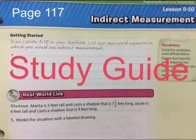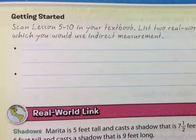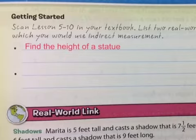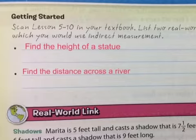Hello everyone, welcome to your study guide lesson 5-10. This lesson is found on page 117 of your study guide. Indirect Measurement. When we talk about indirect measurements, we're going to look for the height of a statue. Simply by using the shadow of the statue, we will find its height. And we can use the same method to find the distance across a river. Please note this down.